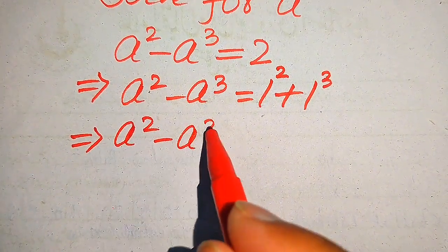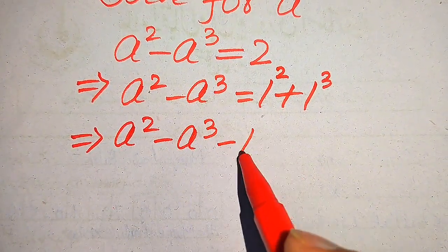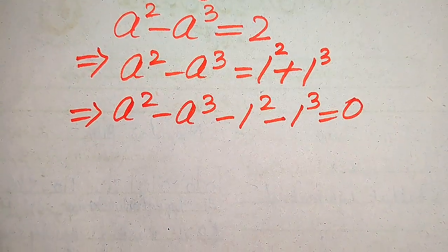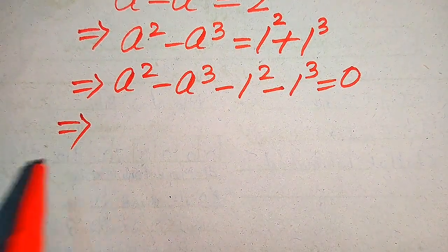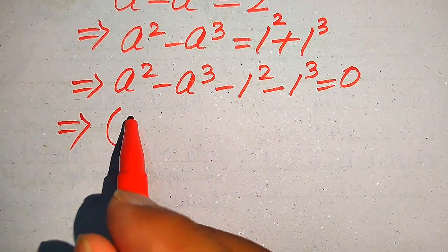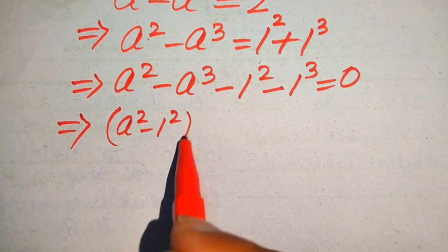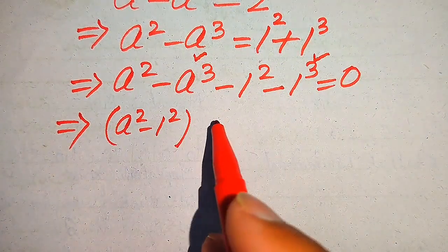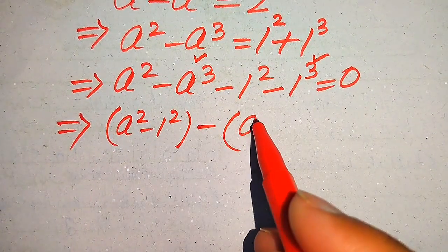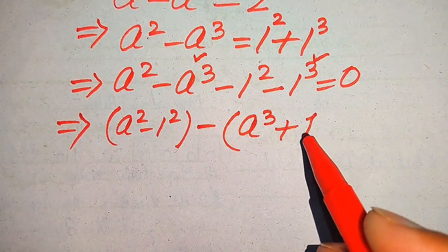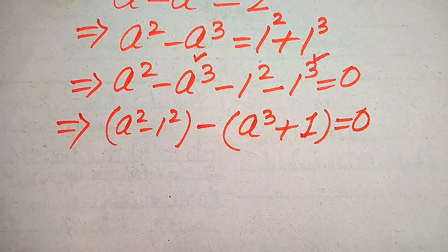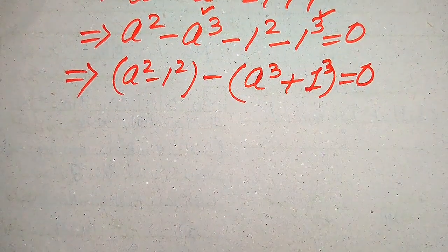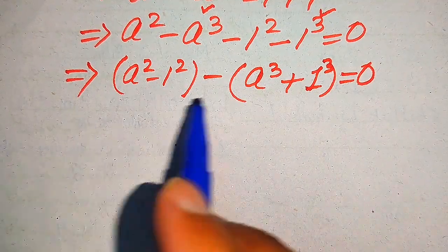We move these two values to the left-hand side: a squared minus a cubed minus one squared minus one cubed equals zero. In the next step, we pair the squared terms together — that is a squared minus one squared — and take a negative sign common from the cubic terms, giving us minus(a cubed plus one cubed) equals zero.